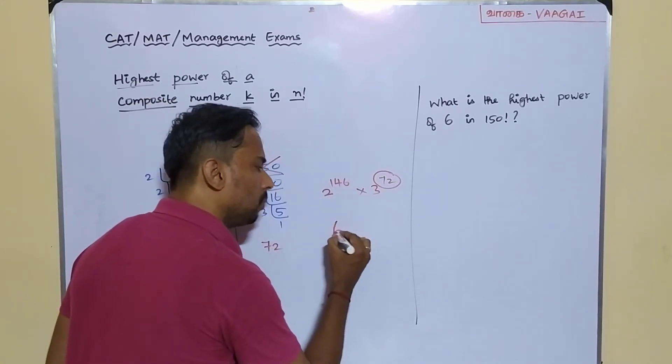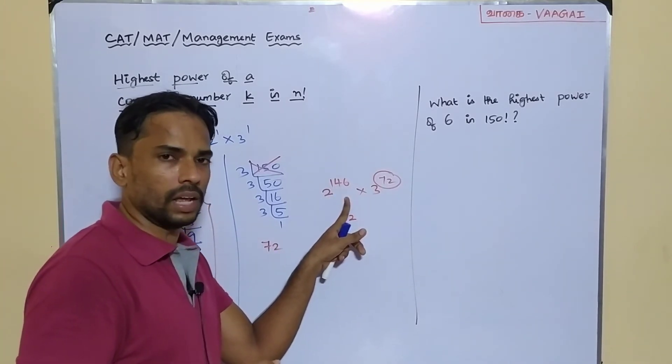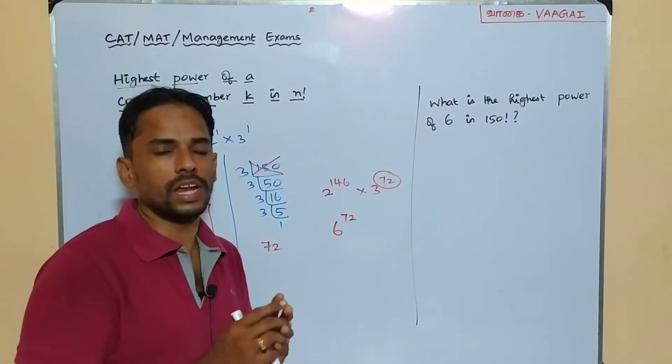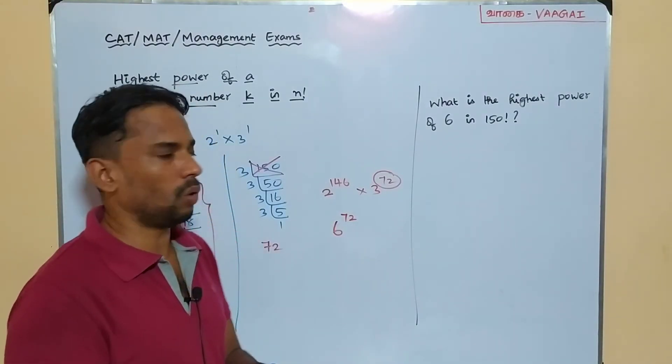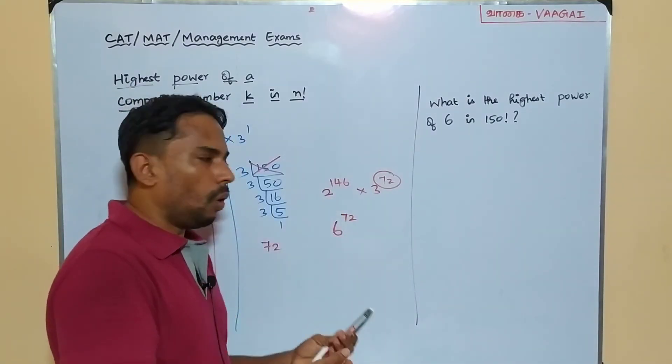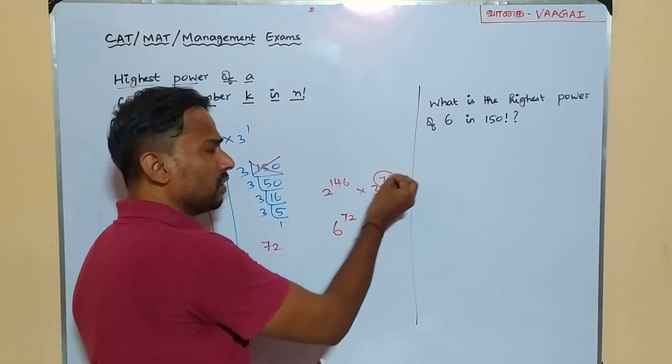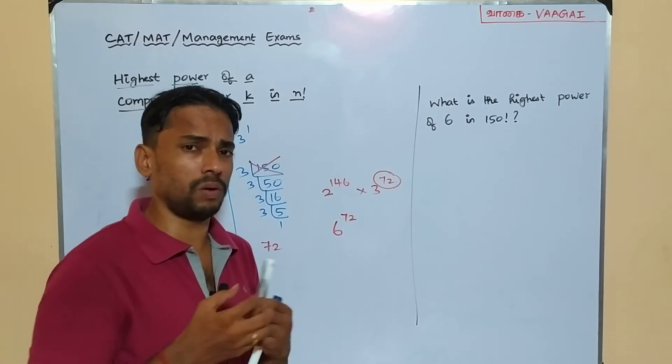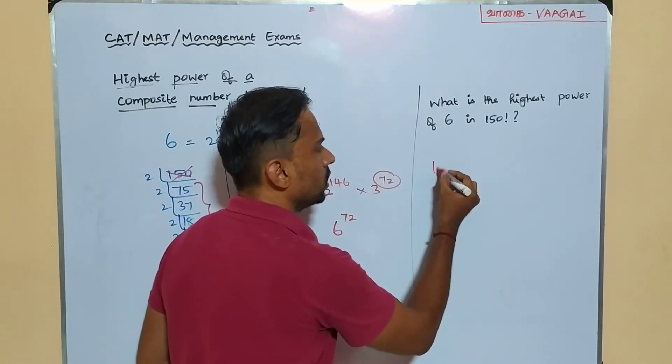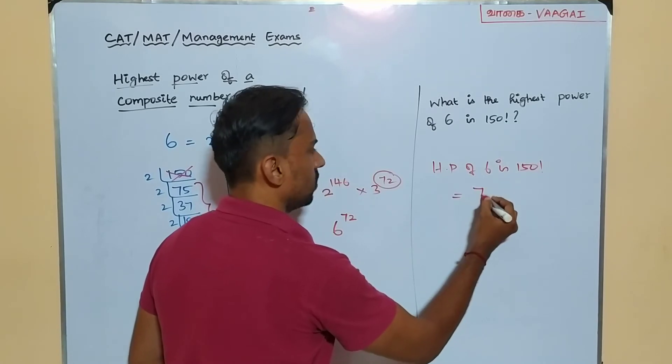It is very easy for us to understand that here the lesser power when we compare among these two, the lesser power is 72. So in that case, we can form a maximum of only 6 power 72. Why? Because the remaining number of 2s will not have its pair of 3 to get it collide and form a 6. We may have still 2 power 146, but all these 2s will not have a pair 3. So maximum I can form only 6 power 72. So the highest power of 6 in 150 factorial, the answer would be 72.